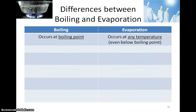So, what are the differences between boiling and evaporation? Boiling occurs at boiling point, but evaporation can occur at any temperature, even at temperatures below the boiling point of the liquid.